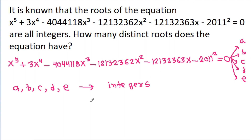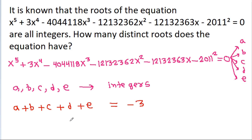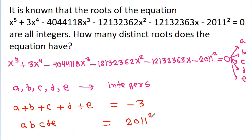So, the sum of roots a + b + c + d + e will be equal to -3, and the product of roots a·b·c·d·e will be equal to minus of minus 2011², that is plus 2011².